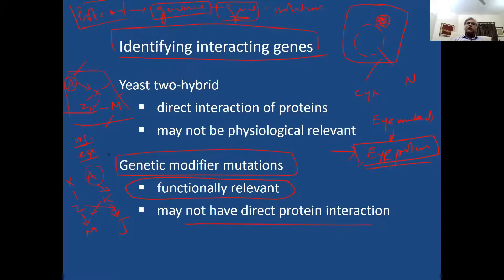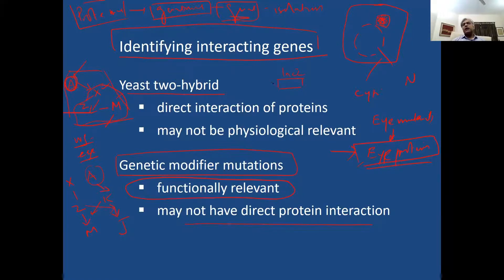To investigate direct physical interactions, people used to use the yeast two-hybrid system — a heterologous system in yeast. We use the cDNA of gene A cloned in such a way that it's part of a reporter system. The yeast cell contains a cDNA library cloned under specific binding sites as a GAL4-based reporter. If A in this cell is interacting with Z, they together will activate the reporter.